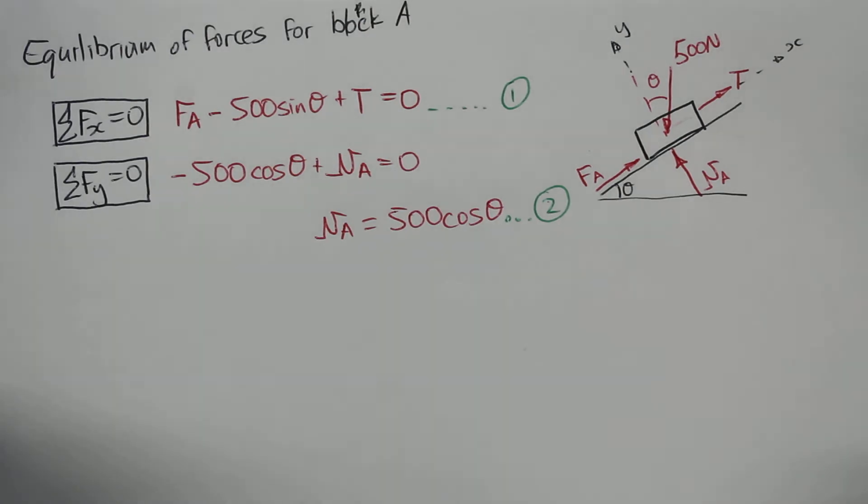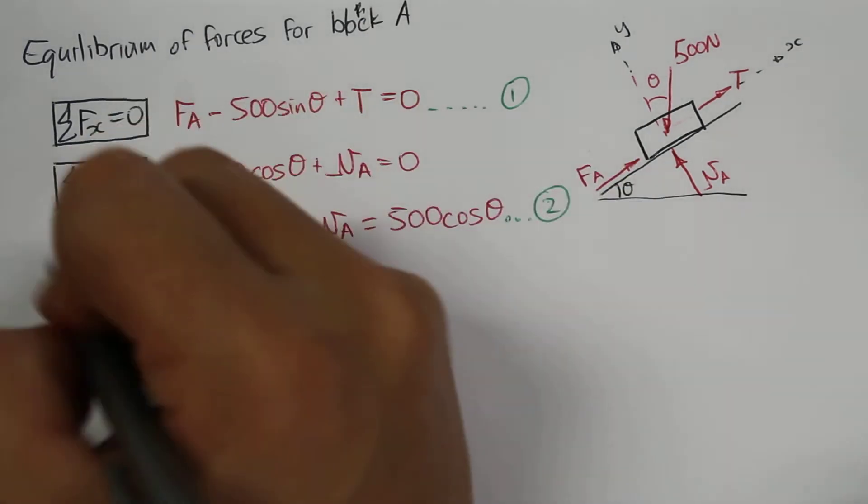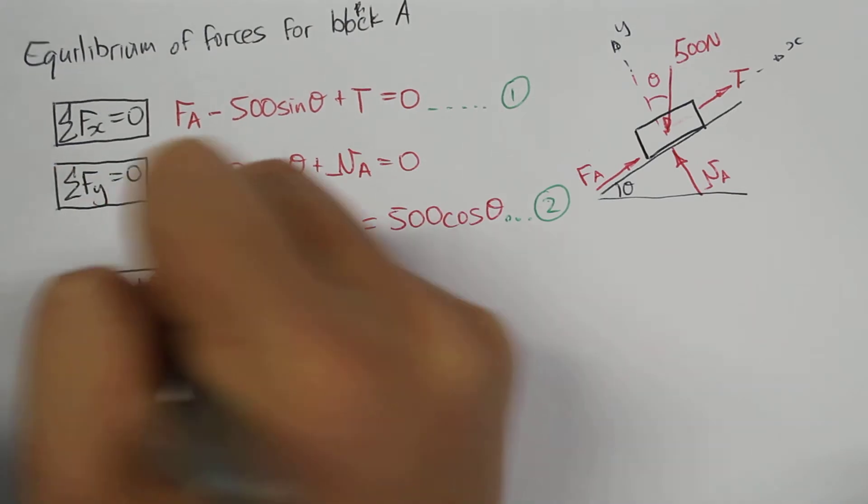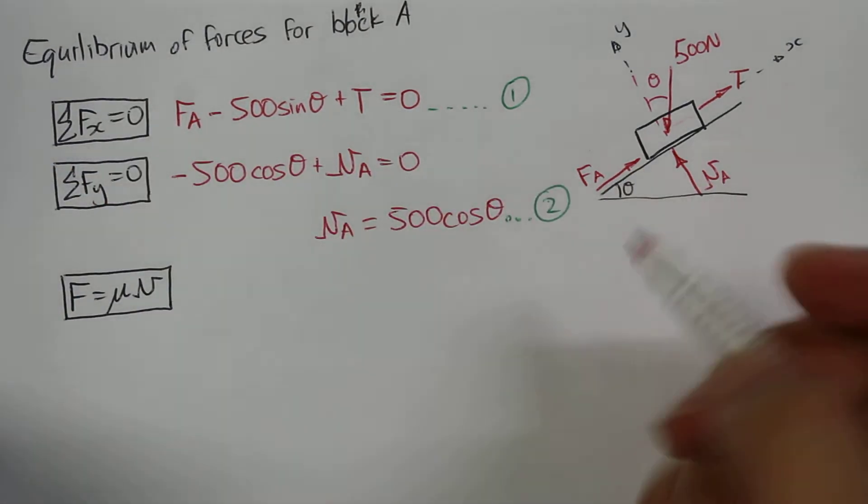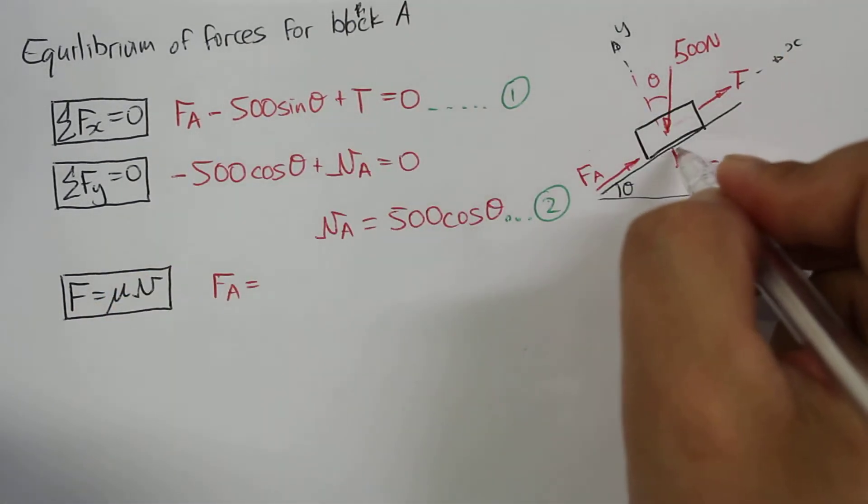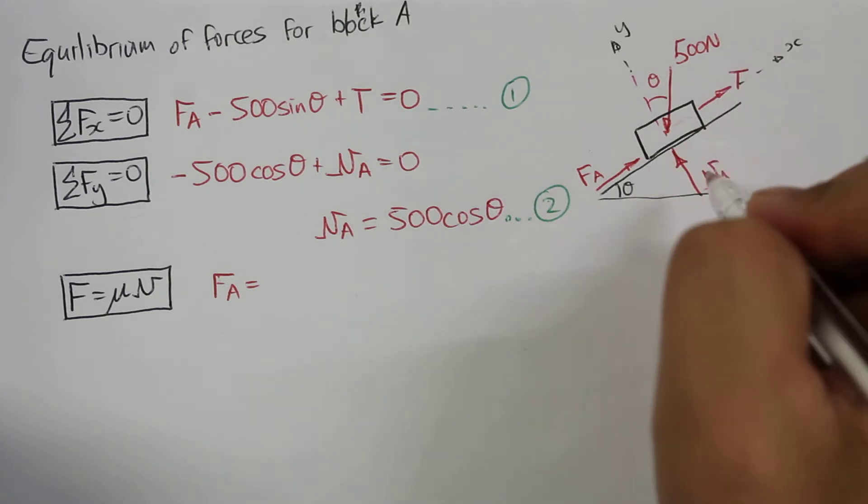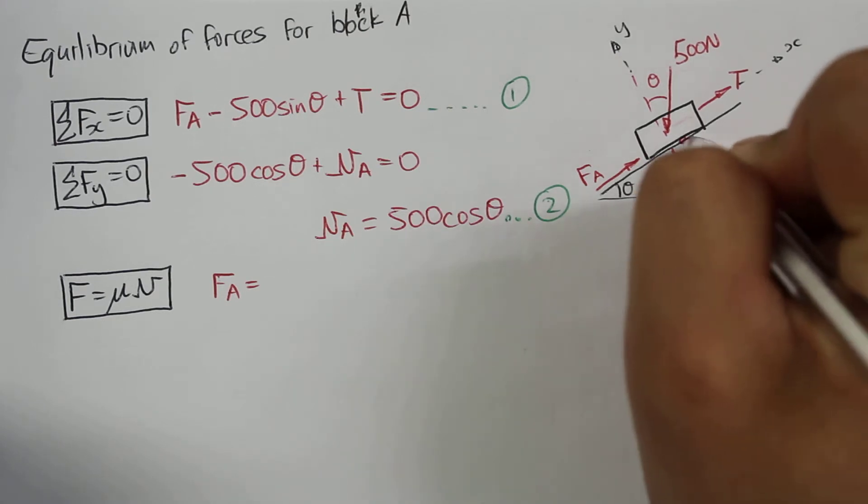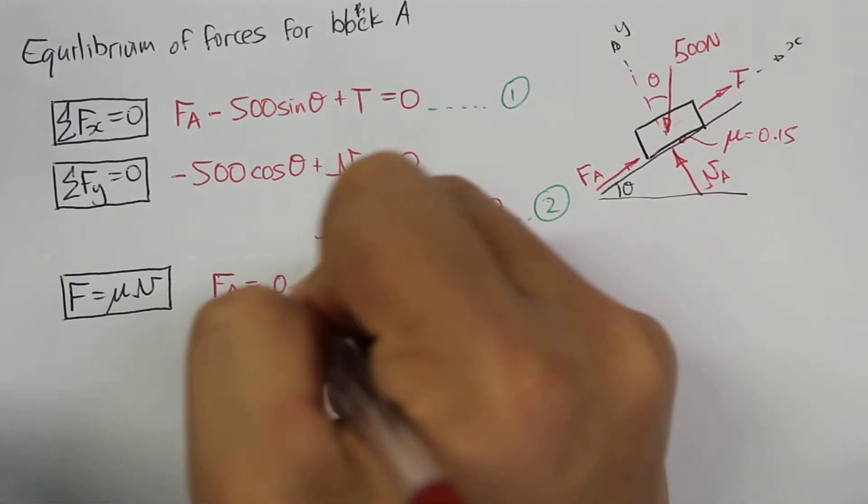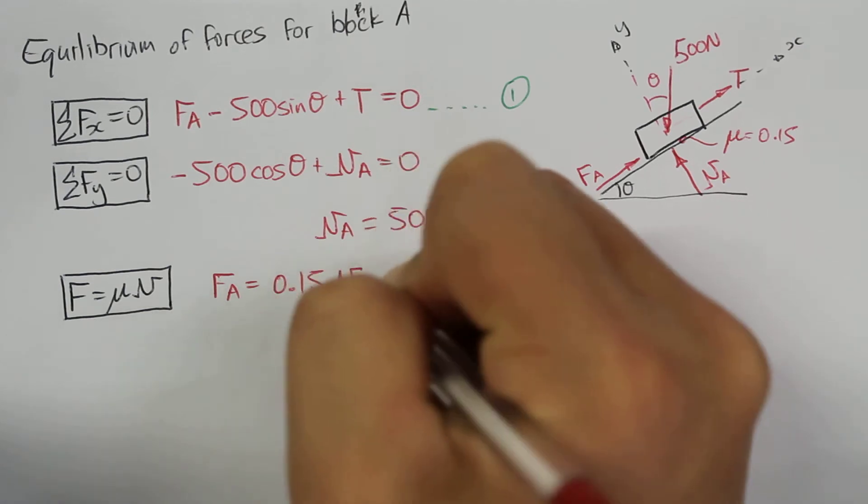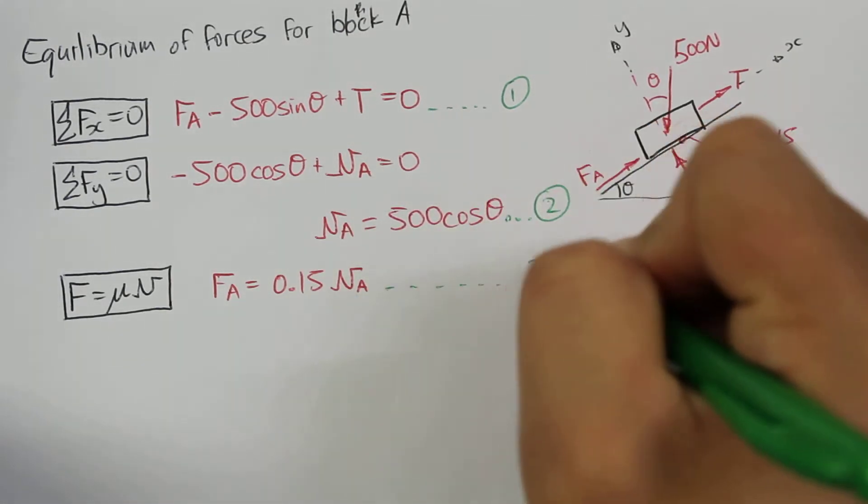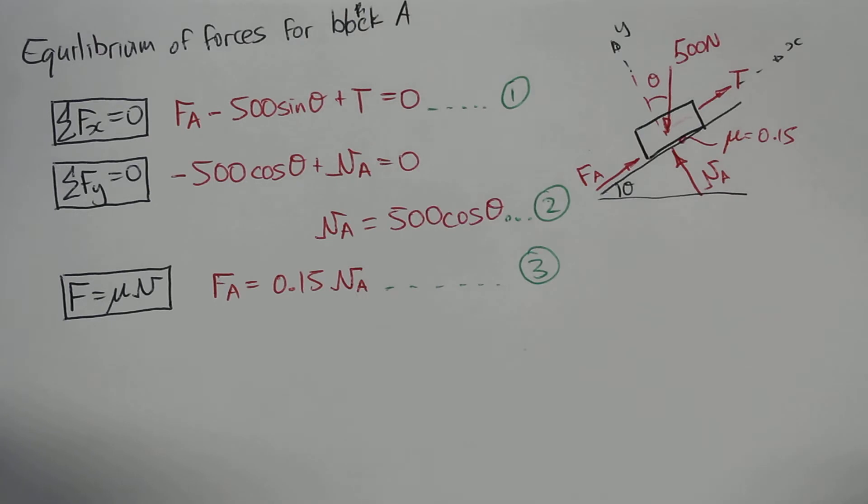Okay, so the third one that we can look at is for the friction force. So this is F equal to mu N. And in this case, the friction force FA is equal to mu for that interface. We were told mu in the question, so for block A, mu is equal to 0.15. So FA is equal to 0.15 times Na. We could call that equation number 3, and then try to solve this system of equations.